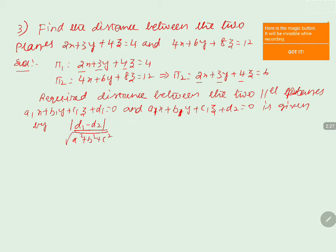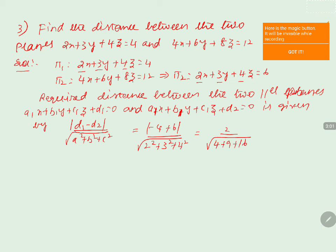According to the problem, d1 is minus 4 and d2 is minus 6. So modulus of d1 minus d2 gives modulus of minus 4 minus minus 6, which is 2. The denominator is the square root of 2 squared plus 3 squared plus 4 squared, which equals the square root of 4 plus 9 plus 16, that is the square root of 29. So the distance between the two parallel planes is 2 divided by the square root of 29.